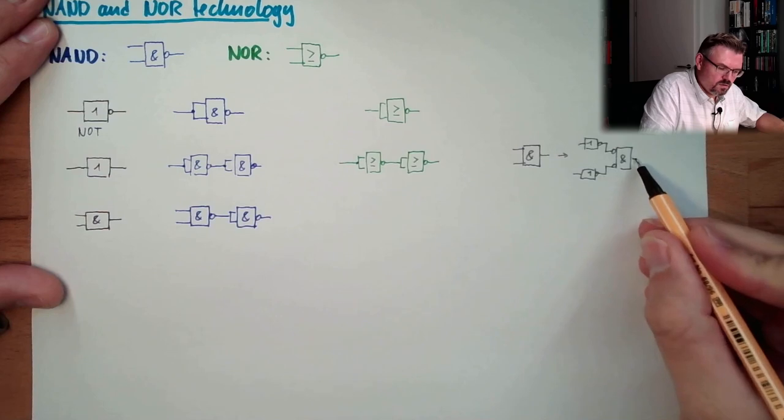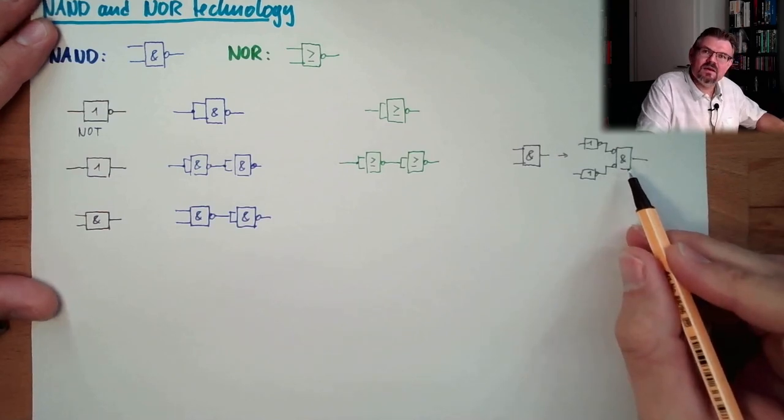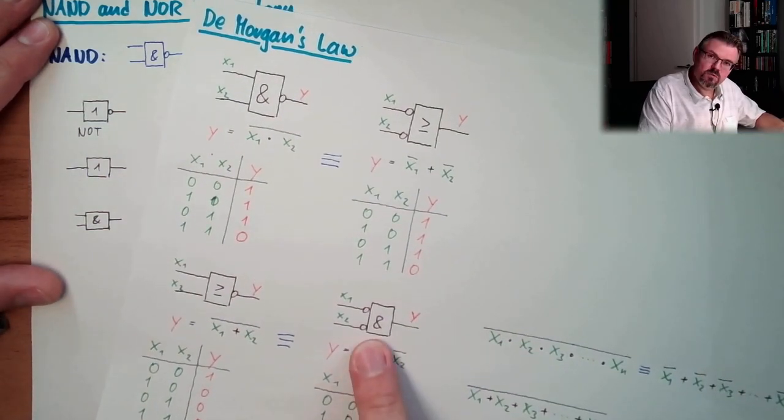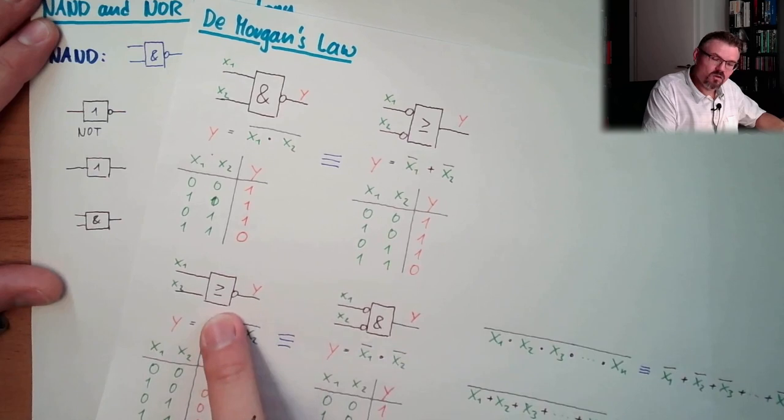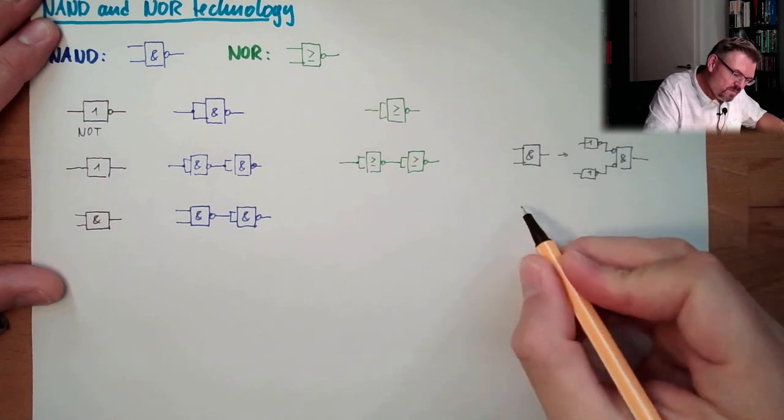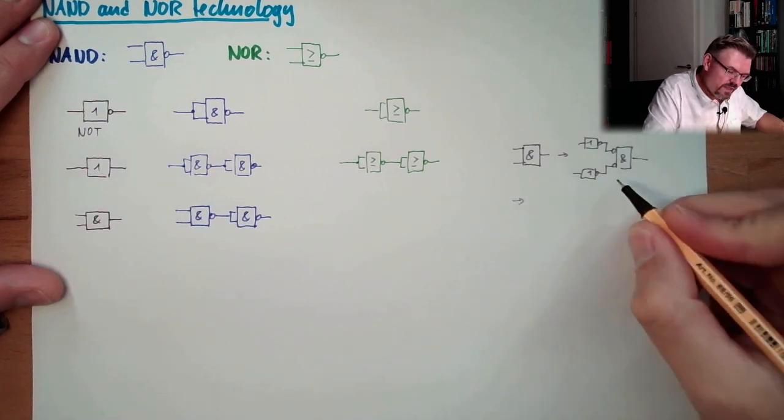And this, rule of the Morgan, I had it here. I had it here. An AND with changed inputs will be a NOR. So, this is exactly, exactly the same as...